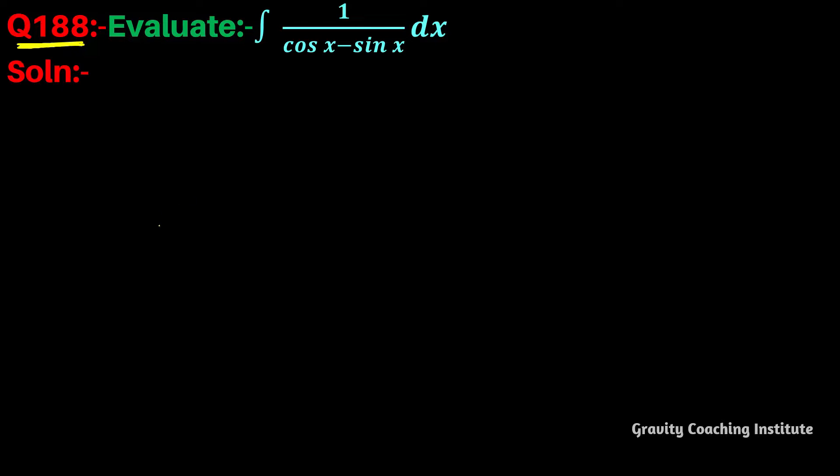Question number 188: Evaluate integration 1 upon cos x minus sin x dx. So first of all, let I equal to integration 1 upon cos x minus sin x dx. In this question we will write the denominator...